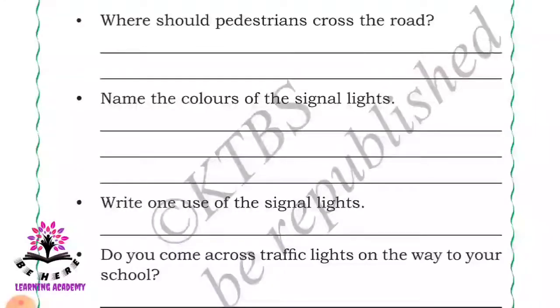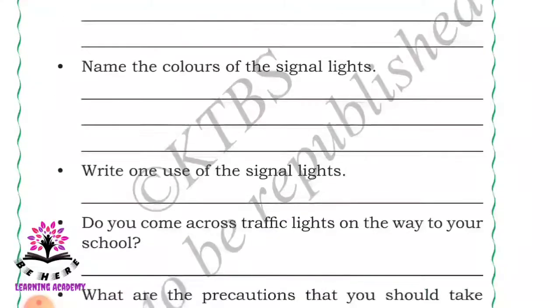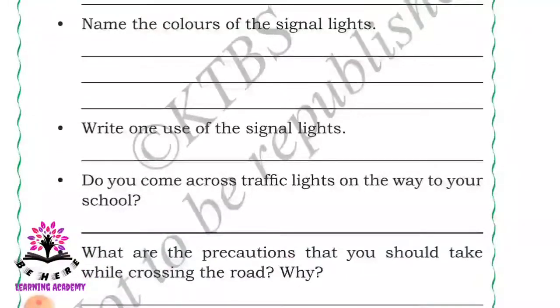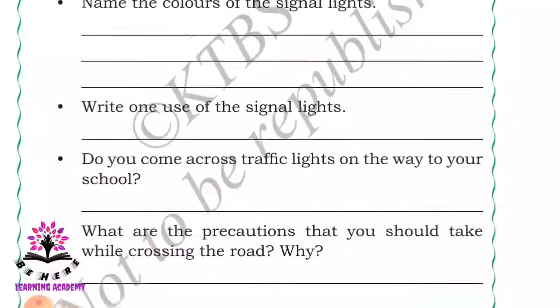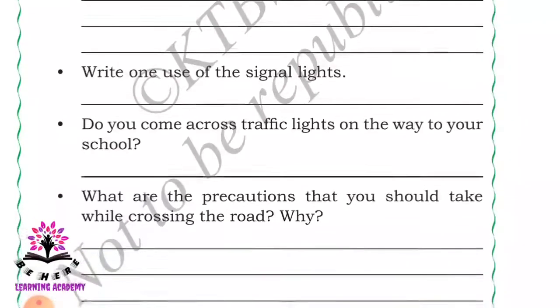Now let us answer the questions below. First: where should pedestrians cross the road? At the zebra crossing. Second: name the colors of the signal light - red, yellow, and green. Third: write one use of the signal light - to avoid accidents between vehicle and people and between vehicles.